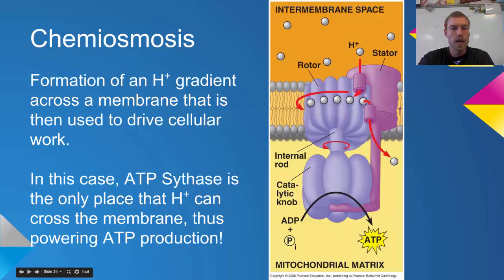Let's talk about what's going on in chemiosmosis. In the intermembrane space we have produced this proton gradient where we have a high concentration of protons in that intermembrane space. Those protons are then allowed to move through the ATP synthase which helps to drive it forward.